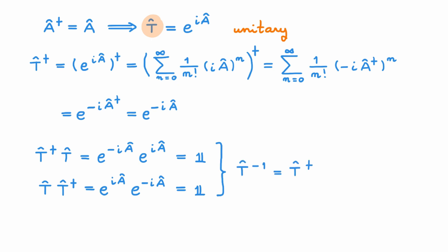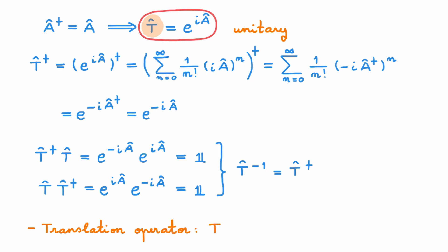We often encounter this form in quantum mechanics, where a unitary operator is given by the exponential of i times a Hermitian operator. As an example, you can check out our video on the translation operator T_α, which translates a position eigenstate by an amount α. It is a unitary operator with this exponential form, and the corresponding Hermitian operator is the momentum operator.